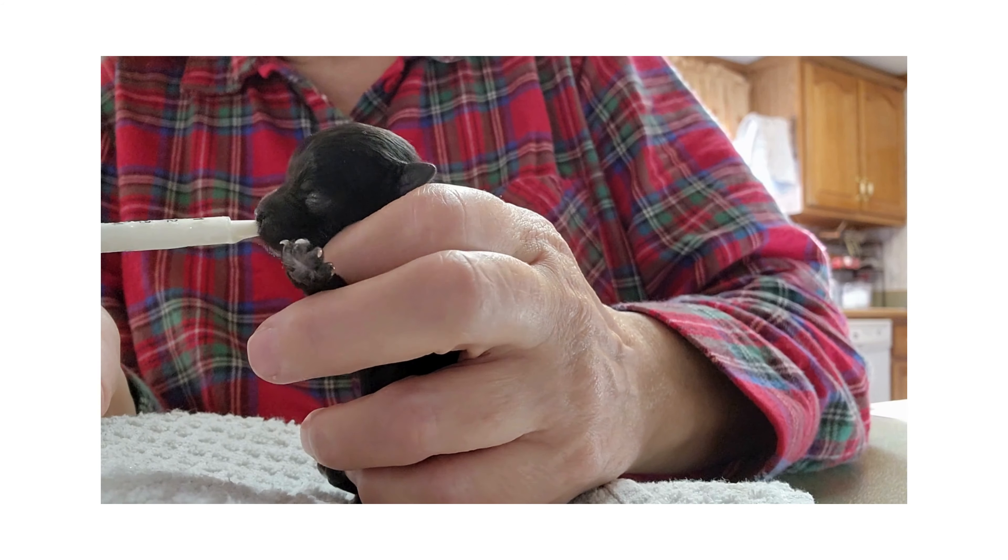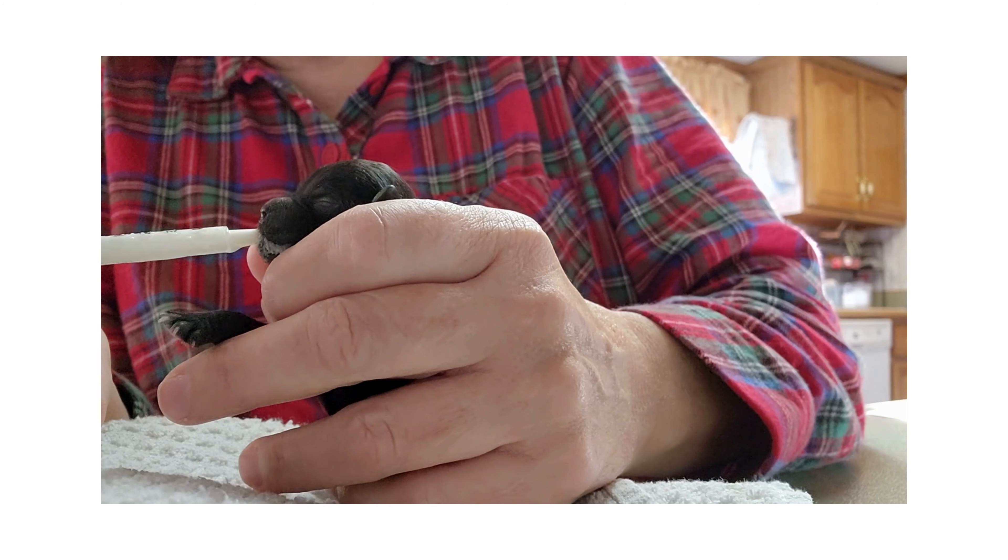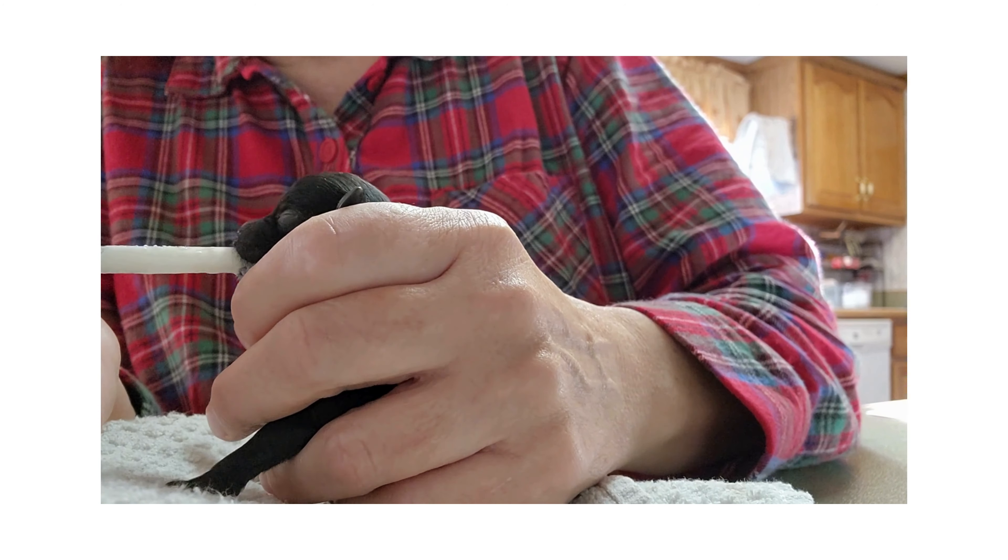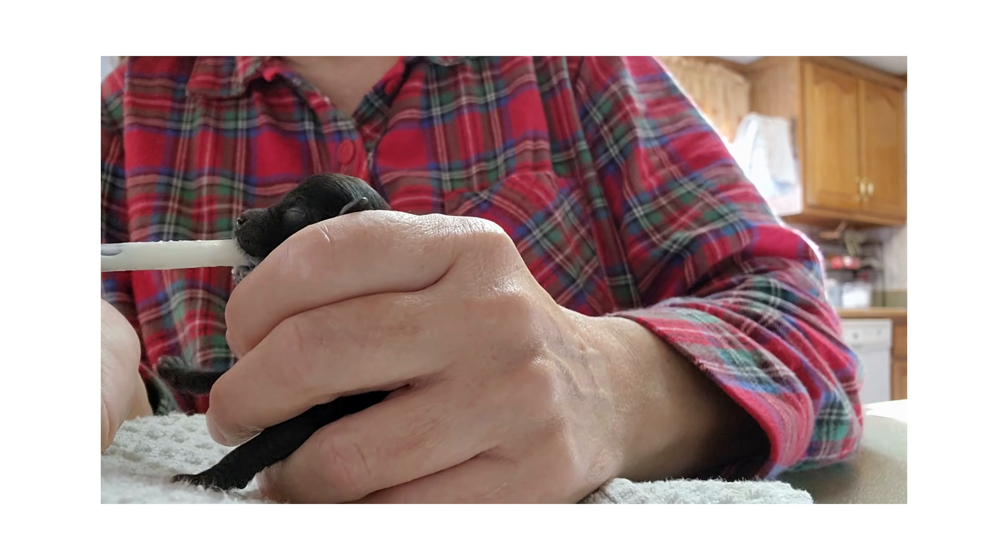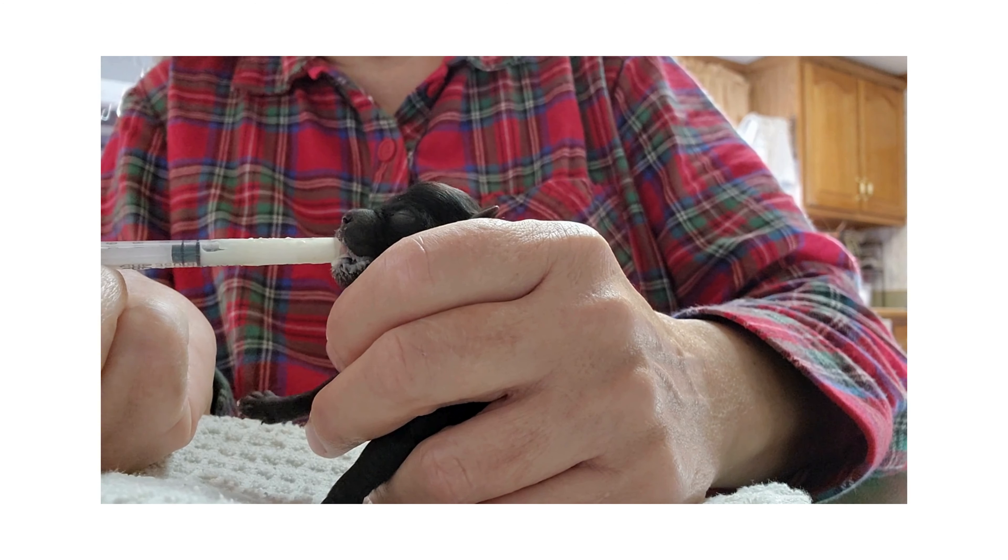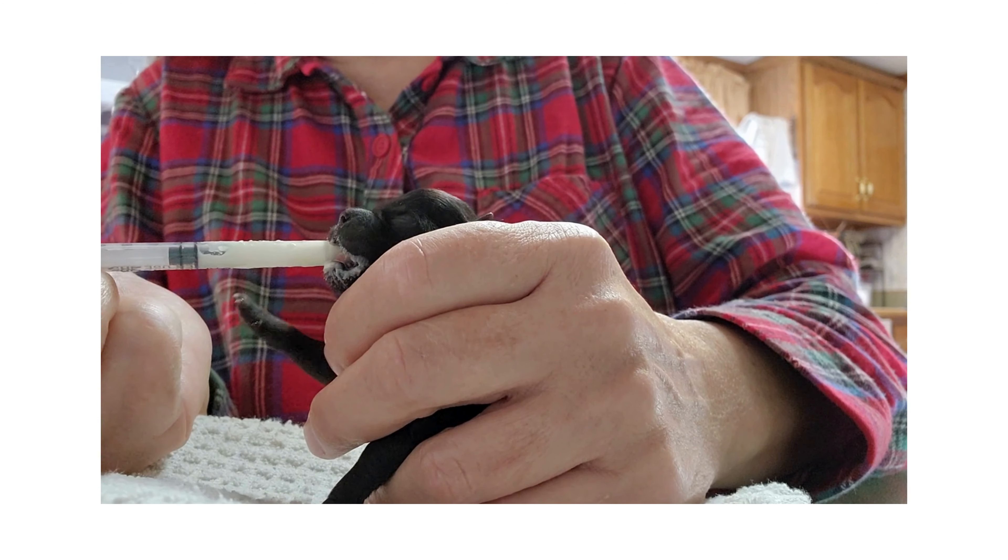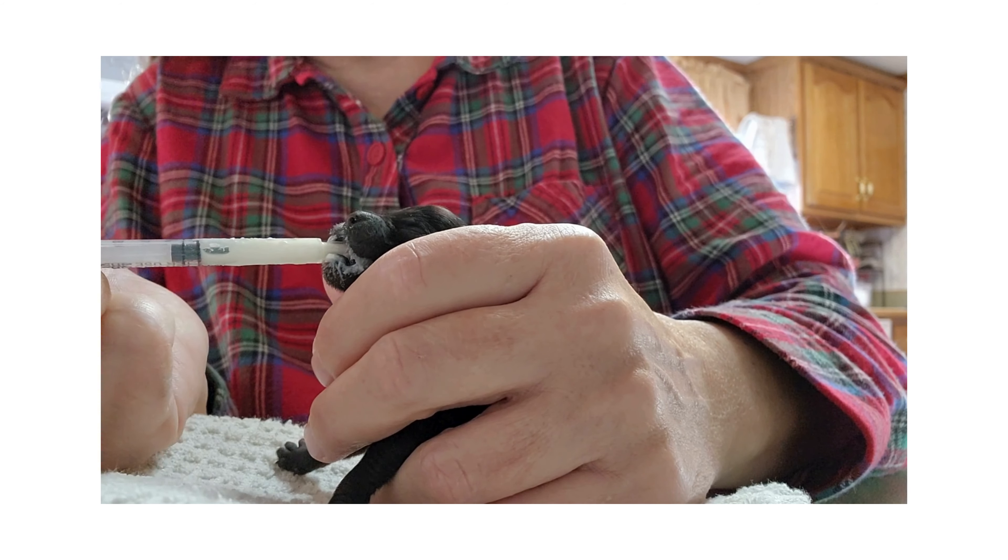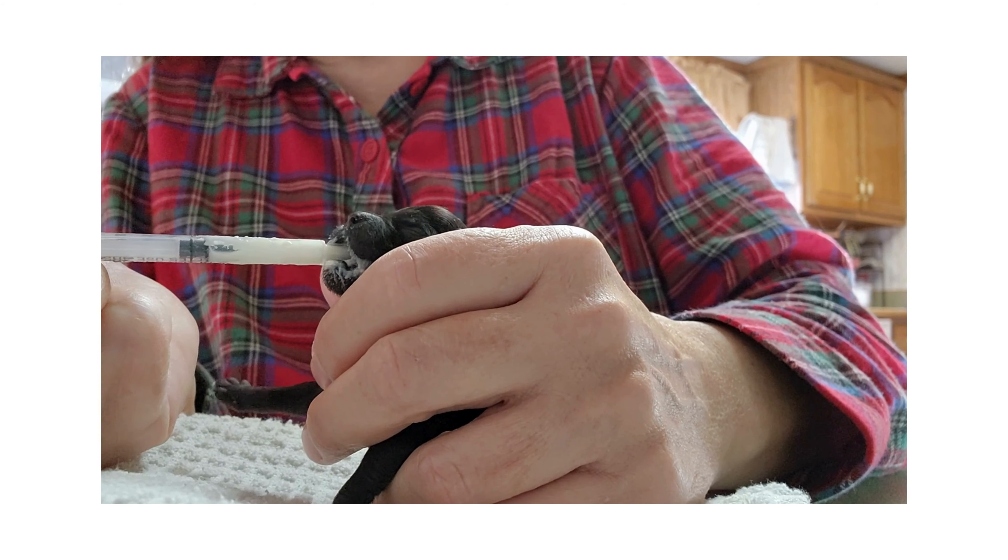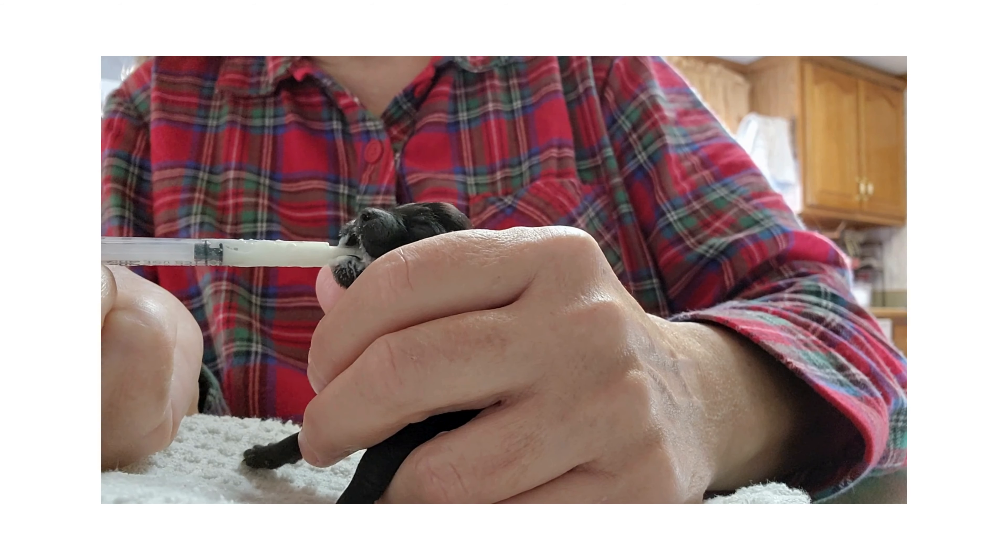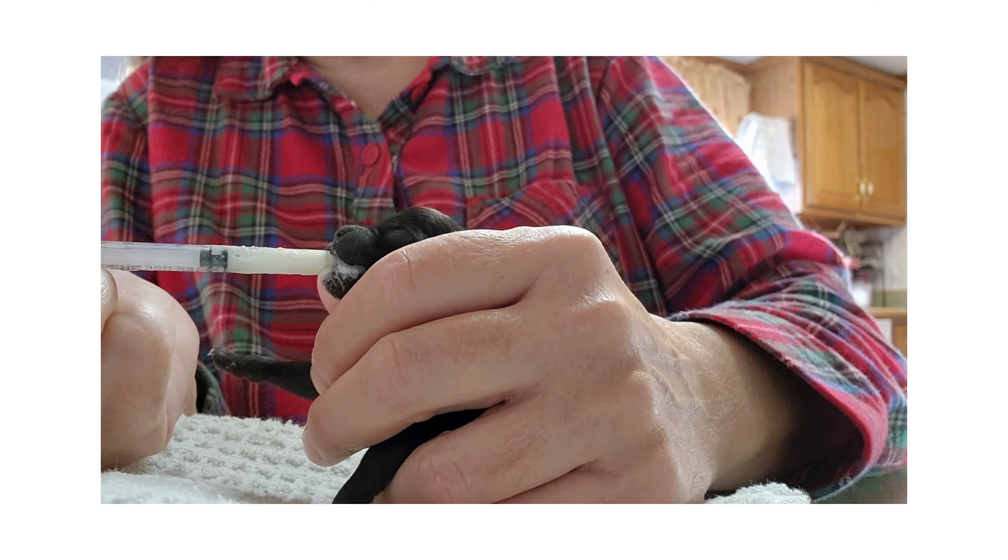When I'm hand feeding little bitty babies like this, I do use a syringe and you do have to be careful. You can just give a tiny little bit at a time. If I have a bigger puppy with a bigger mouth like a Frenchie, I would use a bottle. And if this guy gets bigger, which I'm sure he will, he'll probably use a bottle, but I suspect he'll start nursing from his mom before he gets much bigger.